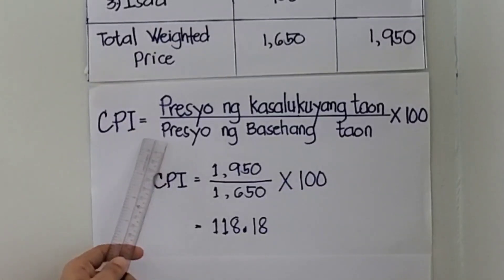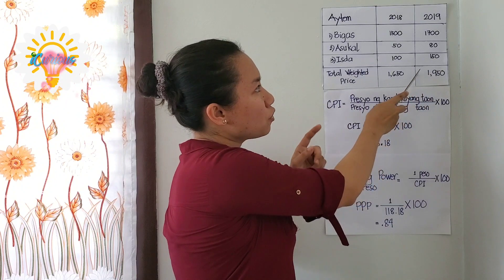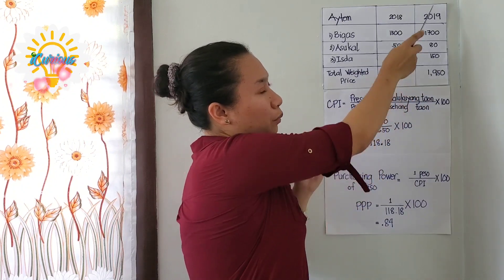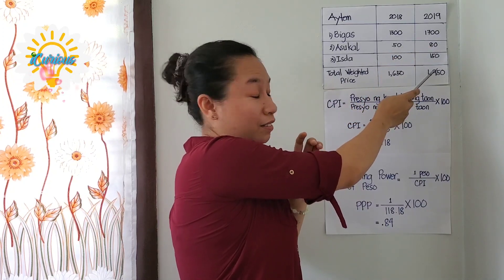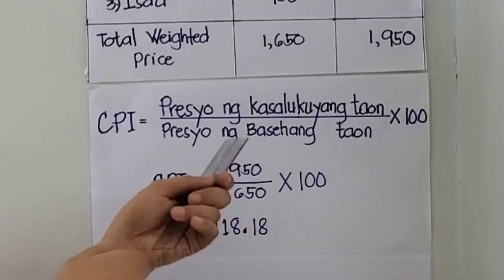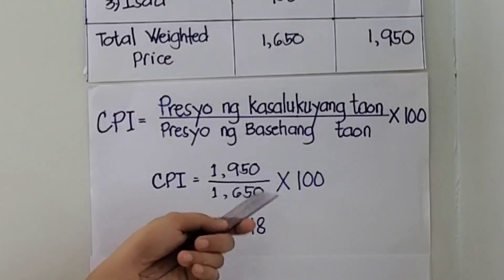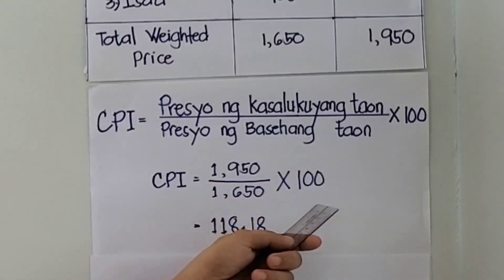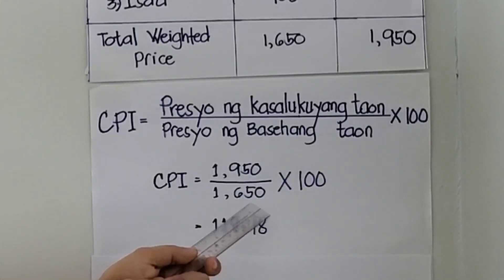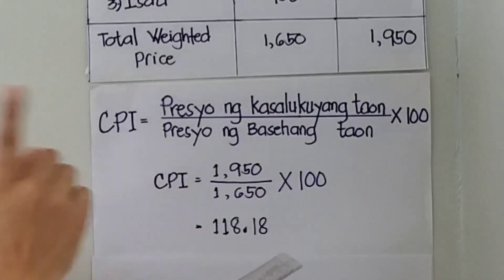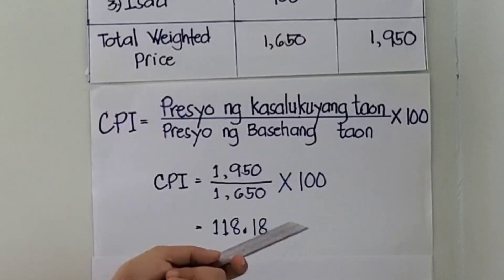Para malaman ang consumer price index, ang formula na ating gagamitin ay: i-divide ang weighted price ng kasalukuyang taon (the most recent year, which is 2019, which is 1,950) divided by presyo ng base year (which is 2018, which is 1,650), multiplied by 100. Kung i-divide natin ang 1,950 divided by 1,650 times 100, ang answer is 118.18.